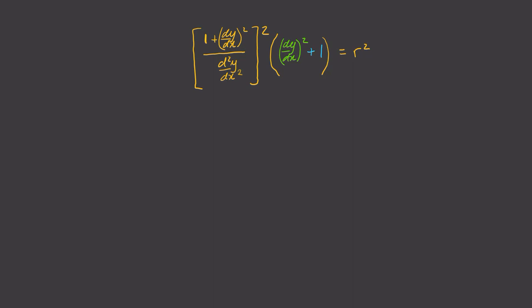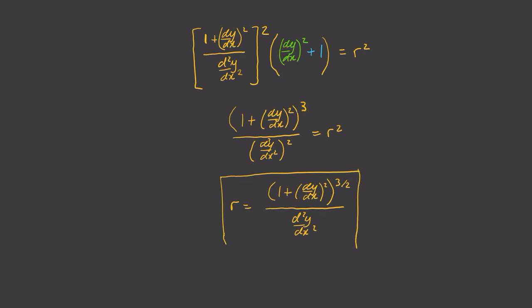Now let's solve for the radius r. Notice that the (dy/dx)² + 1 term can be brought into the numerator like this. Now just take the square root to solve for the radius r. And there we go, we have an expression for the radius of a circle in terms of its derivatives.